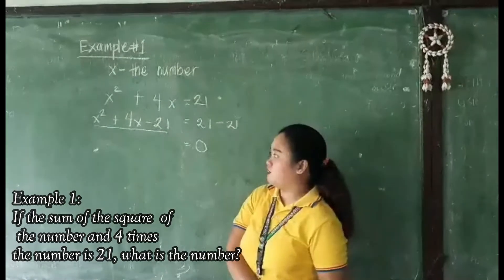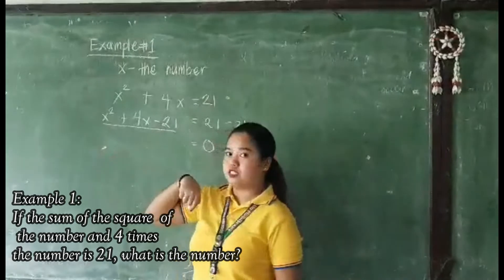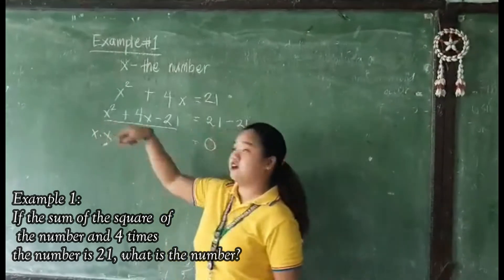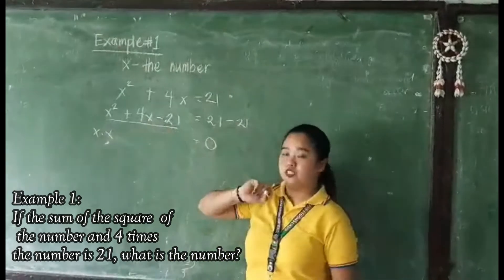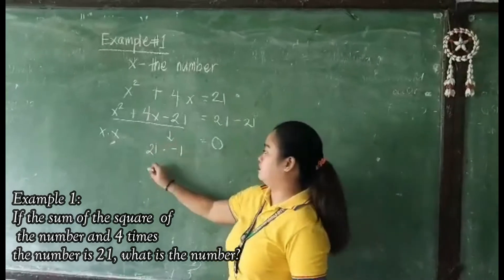But before that, let's find out what is the factors of our first term. So our first term is x squared. So x multiplied by x is the factors of x squared. But what is the factors of negative 21? It will be positive 21 times negative 1,